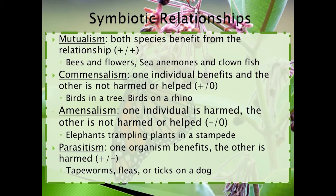Amensalism occurs when one individual in a relationship is harmed, but there is no effect on the other. Herds of animals running across grassland are an example — the grass is harmed, but the herds are not. Parasitism is a relationship where one organism benefits and the other is harmed. The organism benefiting is referred to as a parasite, and the organism that is harmed is referred to as a host. Tapeworms are a good example of a parasite that feeds off the nutrients of the host, harming it in the process.